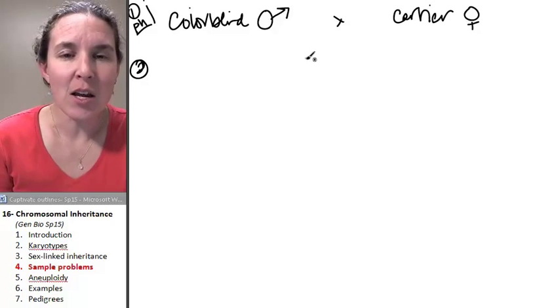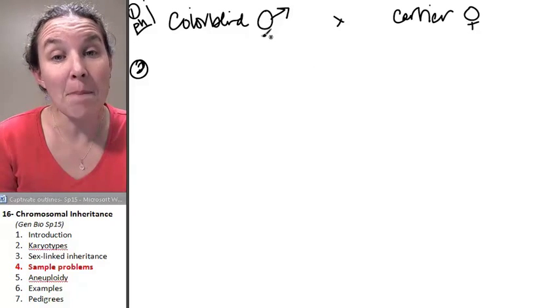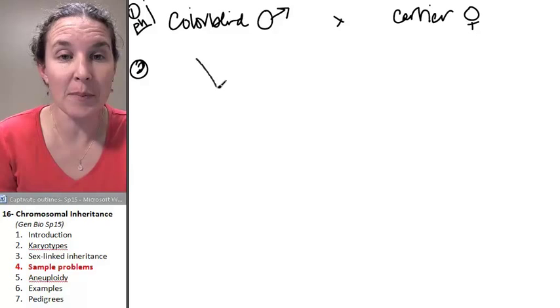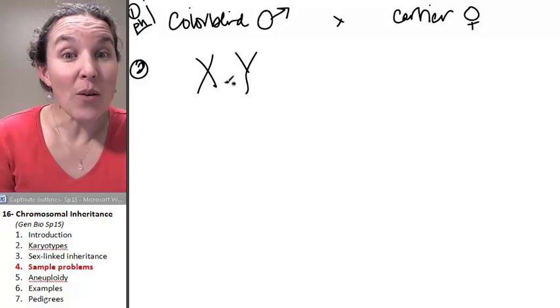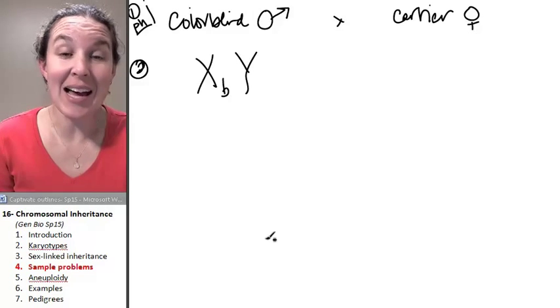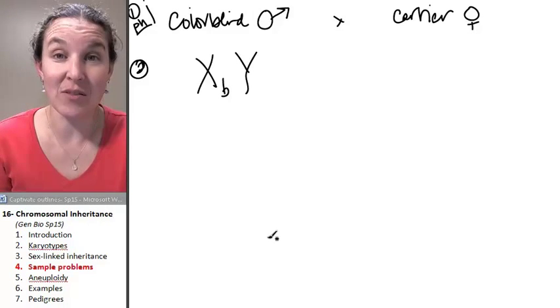Genotypes. So colorblind male, what's his genotype? Well, we know he's an XY because he's a he. And we know that he's colorblind, which means he has to be carrying the recessive allele. Done.